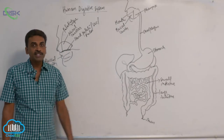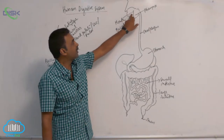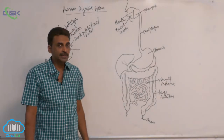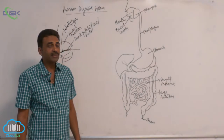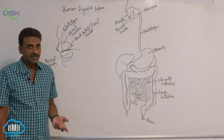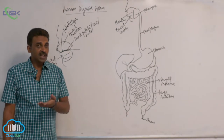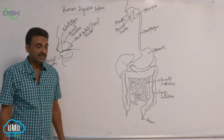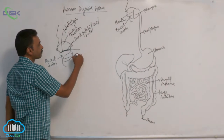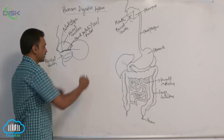The buccal cavity opens into the next cavity called the pharynx. The pharynx is divided into three parts: nasopharynx, oropharynx, and laryngopharynx. If you observe this area, this total area is the pharynx.